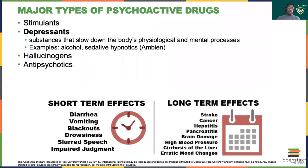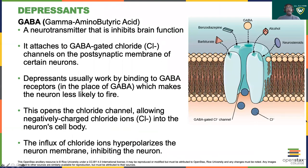The next major type of psychoactive substances are depressants. They do the opposite of stimulants — they slow down the body's physiological and mental processes. These include things like alcohol, Ambien, and other sedatives. Drugs like alcohol work by acting on GABA channels. Gamma-aminobutyric acid, otherwise known as GABA, is a neurotransmitter whose job is to inhibit brain function. When released into the synaptic cleft and attached to receptors on a postsynaptic neuron, it inhibits the firing of that neuron.